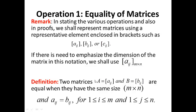Now the first formal definition. Two matrices A equals [Aij] and B equals [Bij] are said to be equal if, one, they have the same size M by N, and two, their corresponding entries are equal: Aij equals Bij for all i and j, with i between 1 and M, and j between 1 and N.